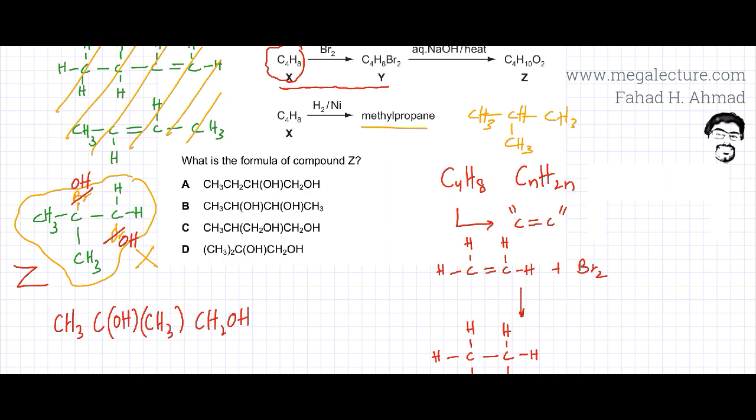Now I need to figure out of these four options which one is going to be the correct option. So it's going to be option D. Option D looks like the correct option because let's draw option D first. Remember we need to have this molecule. So if you look at option D.